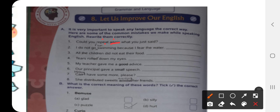Now number three children. All the children did not eat their food. It doesn't sound very correct. So what do we do? We will omit the.